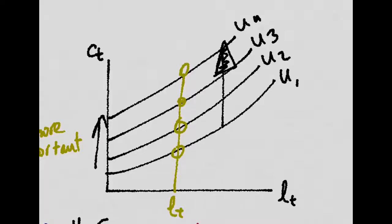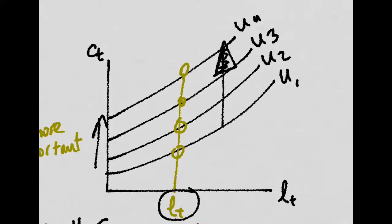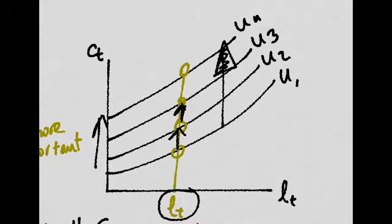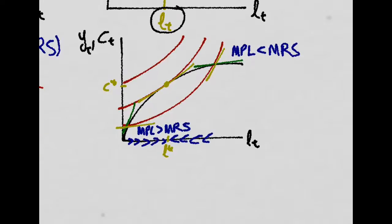Robinson Crusoe will have more utility if, for the same amount of work, he gets more and more consumption. Thus, he wants to maximize his utility function subject to his production function. And this optimal point is this one here, in which the MRS is equal to the MPL.